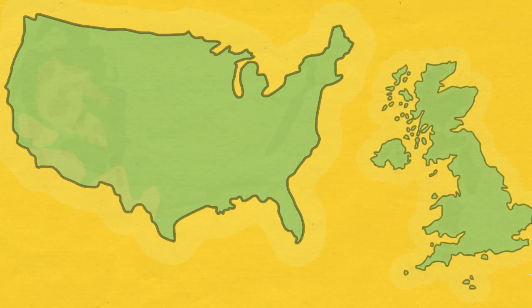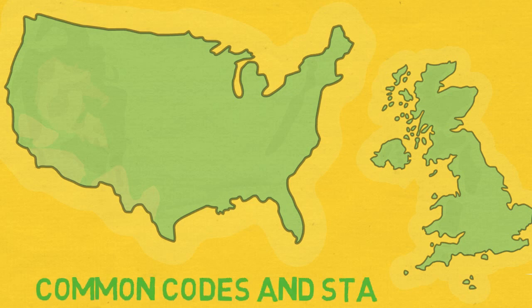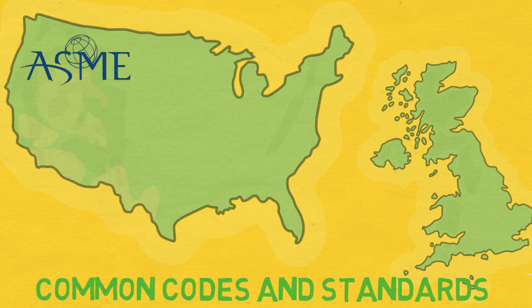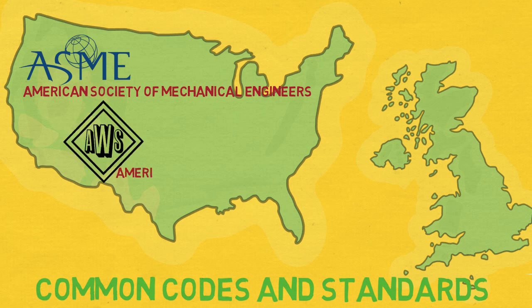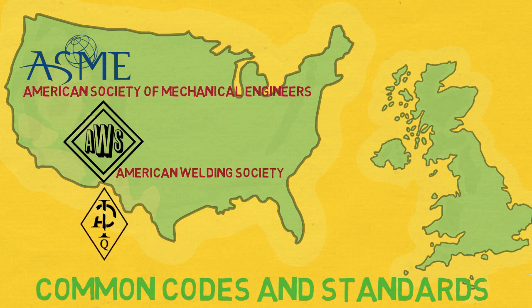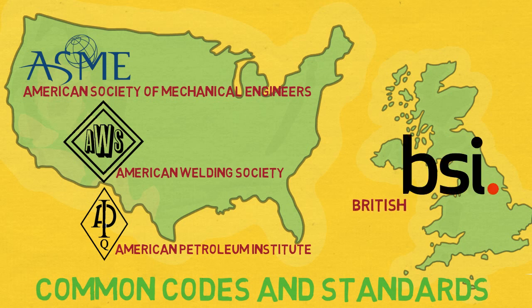There are four most common codes and standards organizations. They are the American Society of Mechanical Engineers (ASME), the American Welding Society (AWS), the American Petroleum Institute (API), and British Standard. The codes established by these organizations are adopted worldwide.